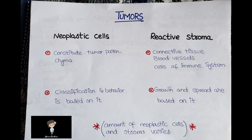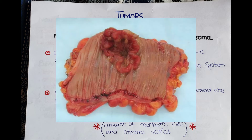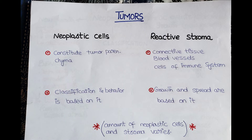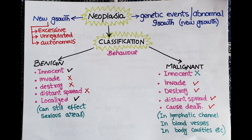The classification and biological behavior of a tumor depends upon its neoplastic cells, while growth and spread depends upon the stroma. The amount of neoplastic cells and stroma varies from tumor to tumor. In some tumors, neoplastic cells are dominant, giving a fleshy mass appearance, whereas some tumors have dominant stroma cells.